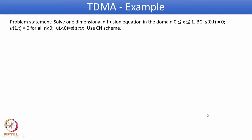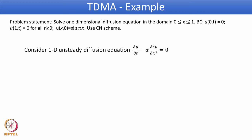We will take an example problem to explain the TDMA procedure. Problem statement: solve the one-dimensional diffusion equation in the domain x from 0 to 1, with boundary conditions u(0, t) = 0 and u(1, t) = 0 for all t ≥ 0, and initial condition u(x, 0) = sin(π*x). It is specifically asked to follow the Crank-Nicholson (CN) scheme. We consider the one-dimensional unsteady diffusion equation: ∂u/∂t - α*(∂²u/∂x²) = 0.